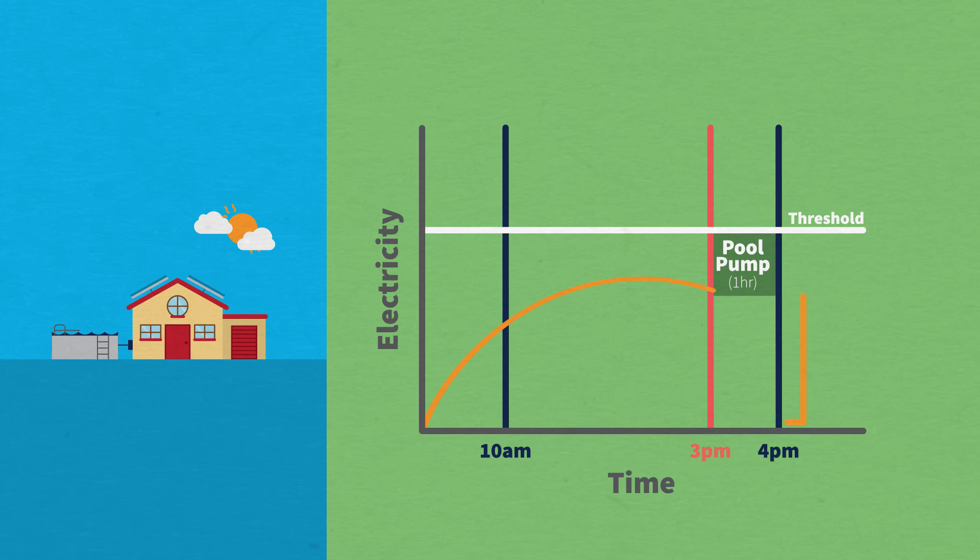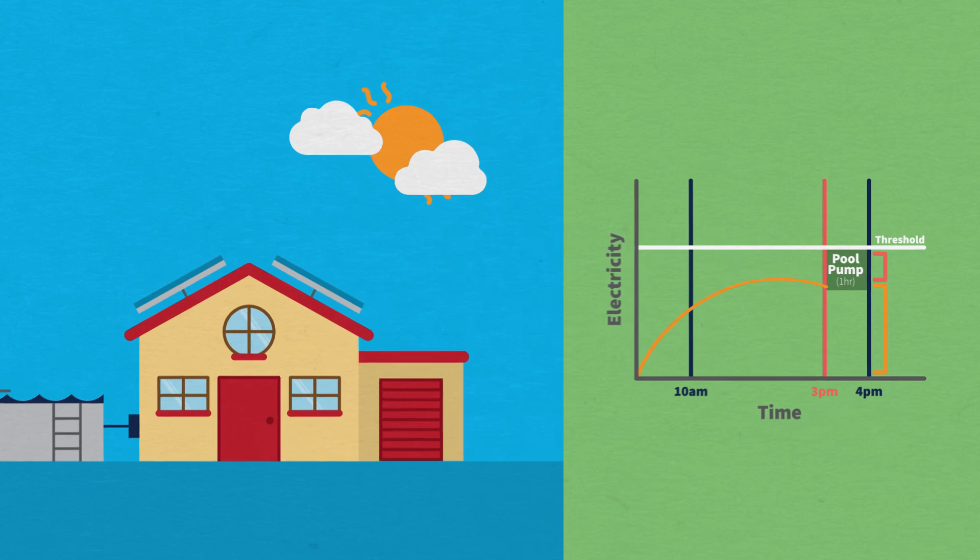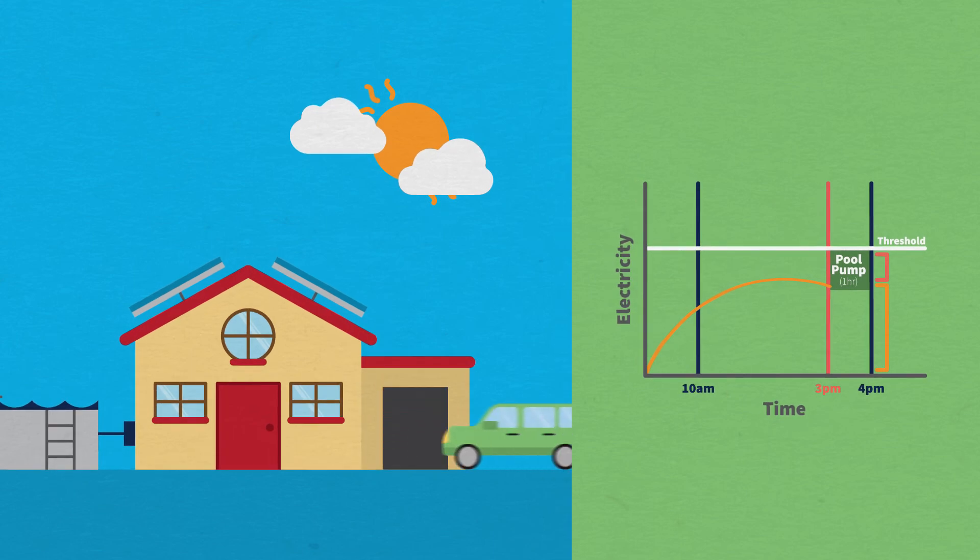It will run using any available solar, with other sources of power, like the grid, filling in the gaps. This means you can get home and not worry whether your circuit has run or not.